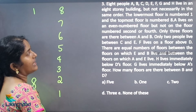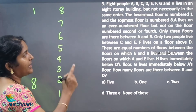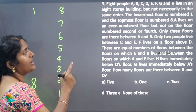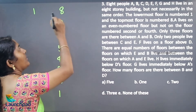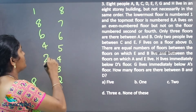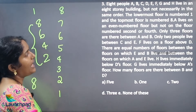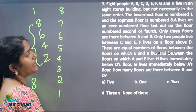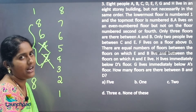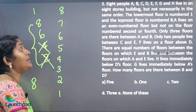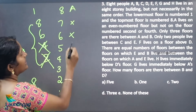Now listen. A lives on an even numbered floor. Even numbers are 8, 6, 4, 2 — so the possible chances are A will be living on any of these 4 floors. But not on the floor numbered 2nd or 4th — so 2 and 4 are excluded. After that, only 3 floors are between A and B. So if I am placing A here, only 3 persons are between A and B.